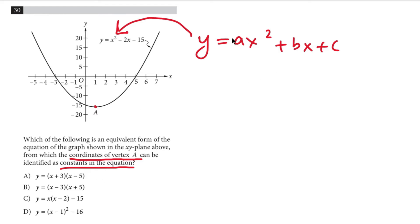the form of this equation where the vertex can be identified as constants in the equation is the vertex form. I'm sure you have heard of this and the equation of the vertex form goes like this: